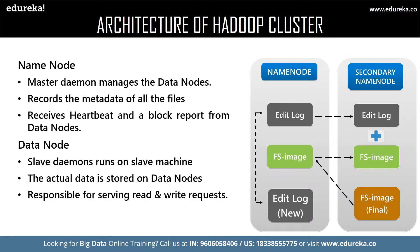The name node also receives a status update of the task assigned. If any data node fails to respond with a heartbeat, the name node considers it dead and reassigns the task to the next data node. Data nodes are called slaves of the name node. They are responsible for storing the actual data and for updating task status and health status to the name node in the form of a heartbeat.